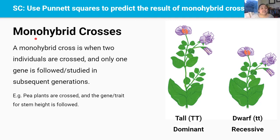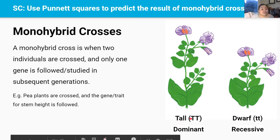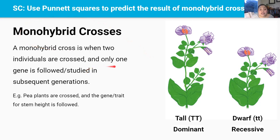In 2.5, we'll be studying several types of crosses: monohybrid crosses and test crosses covered in this video, and dihybrid crosses in a future video. A monohybrid cross is a type of cross where two individuals are mated but only one trait is followed in subsequent generations. For example, the height of pea plants is controlled by a single gene with two alleles — tall and dwarf. The tall allele is dominant, shown by big T, and the dwarf allele is recessive, shown by small t. Geneticists found this out through monohybrid crosses studying just this one gene.